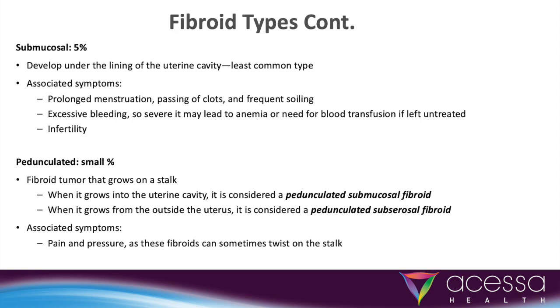Submucosal fibroids, found in the lining of the uterine cavity, are the least common type of uterine fibroid. They can cause heavy, prolonged bleeding and infertility. These represent only about 5% of uterine fibroids.